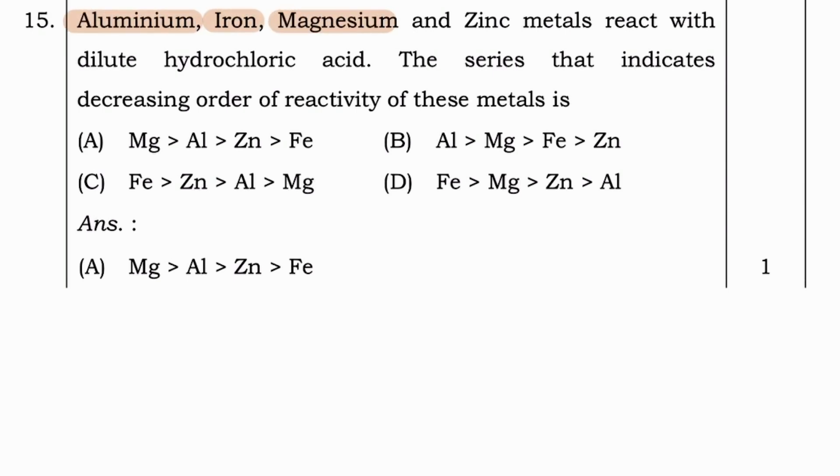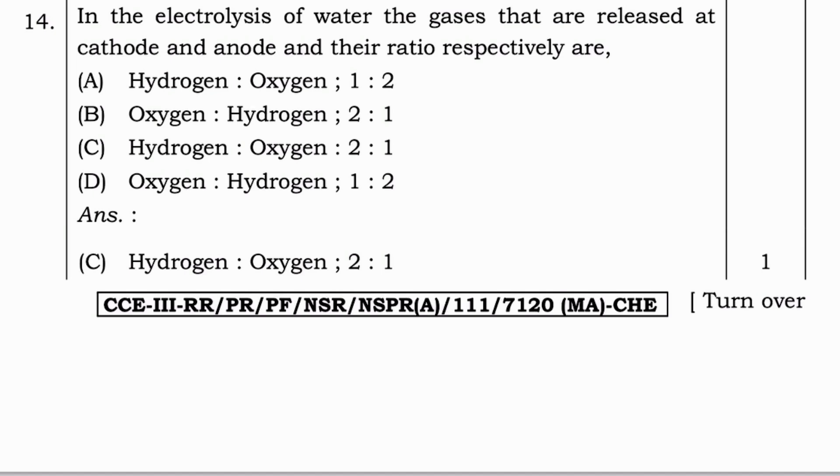Next question. Aluminium, iron, magnesium, and zinc metals react with dilute hydrochloric acid. The series that indicates decreasing order of reactivity of these metals is Mg is higher than Al, then Zn, and then Fe. In option B, Al then followed by Mg, Fe, and Zn. Option C, Fe, Zn, Al, Mg. And in option D, Fe, Mg, Al, Zn. And the correct answer for this question is option A.